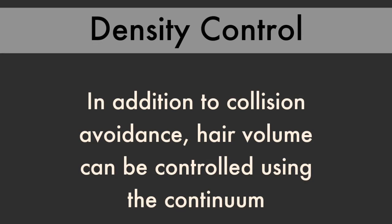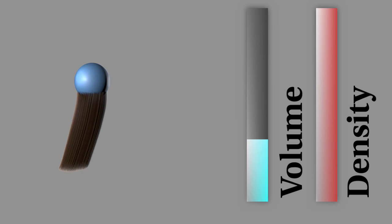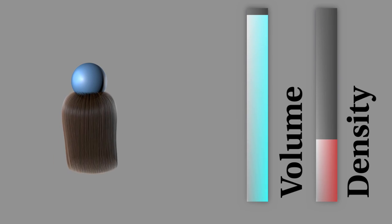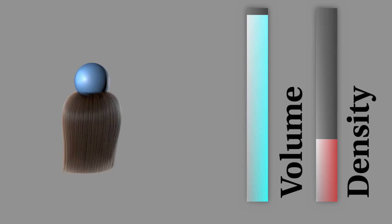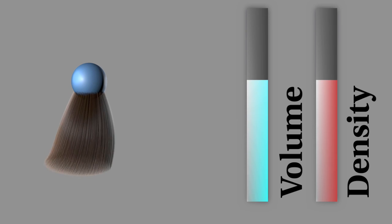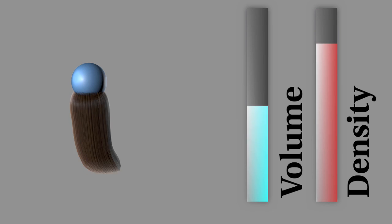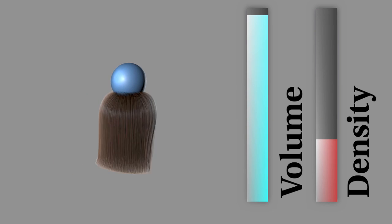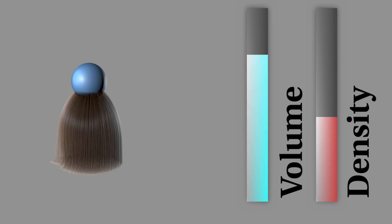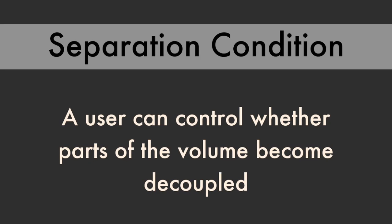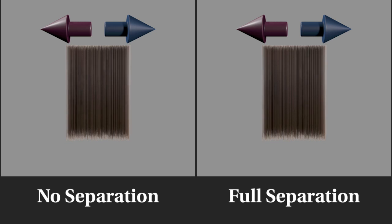In addition to collision avoidance, we can also control density and volume. The degree to which parts of the volume are coupled can be controlled with a separation condition.